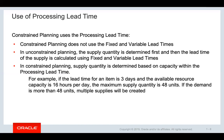In constraint supply planning, the supply quantity is determined based on capacity within the processing lead time. For example, if the lead time for an item is 3 days and the available resource capacity is 16 hours per day, the maximum supply quantity would be 48 units. If the demand is more than 48 units, multiple supplies will be created.